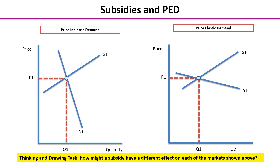What we're going to ask you to do is to think about how a subsidy would affect each of these markets. If we ask you to put a subsidy curve — supply plus subsidy — with roughly the same size per unit subsidy, so roughly the same distance in each case from the original supply curve. If you pause the video, add on your subsidy curves and then restart the video, we can compare notes.